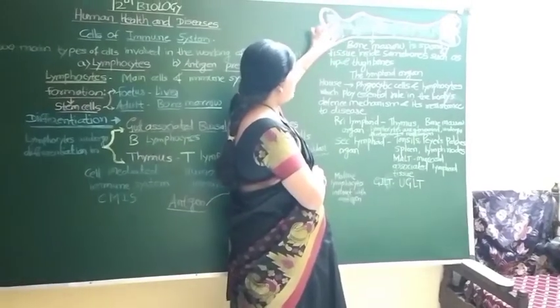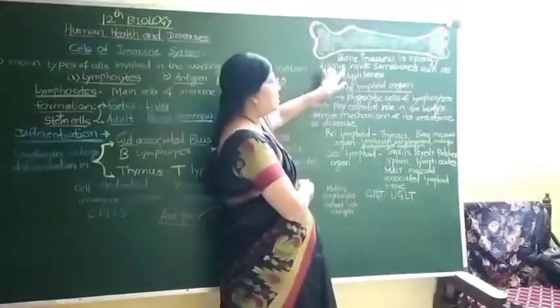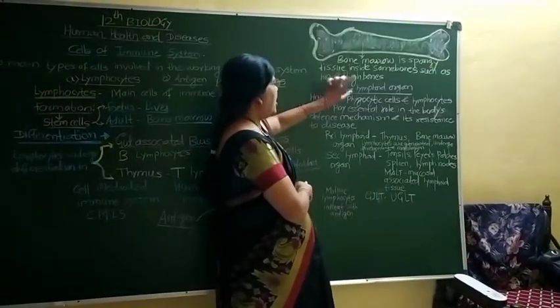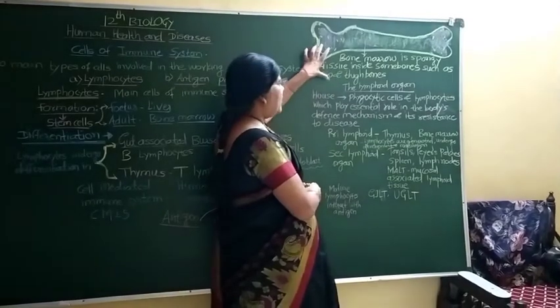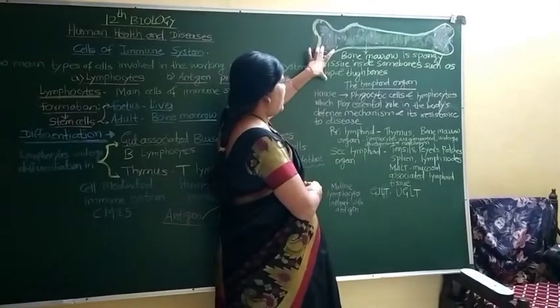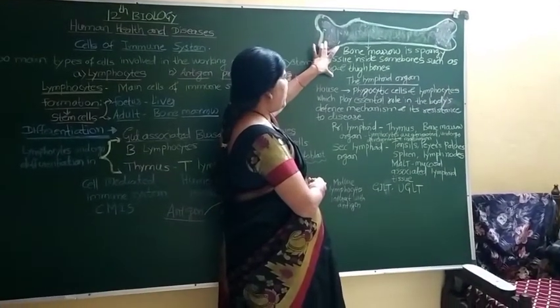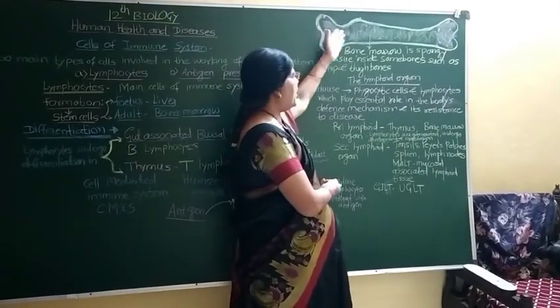Bone marrow is a spongy tissue found inside some bones, such as the hip bone and the thigh bone, and from here lymphocyte differentiation occurs.